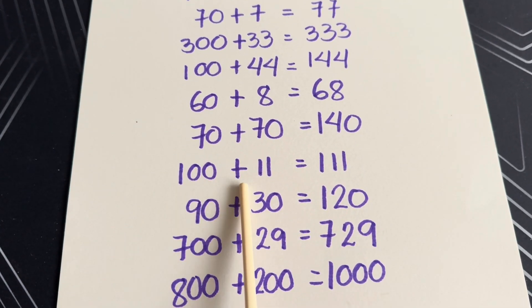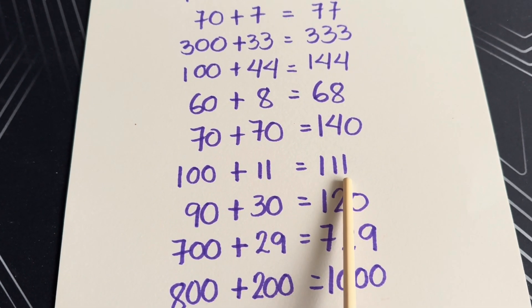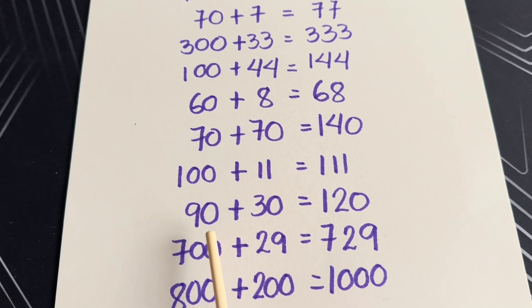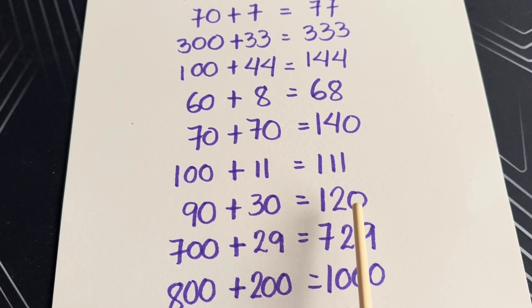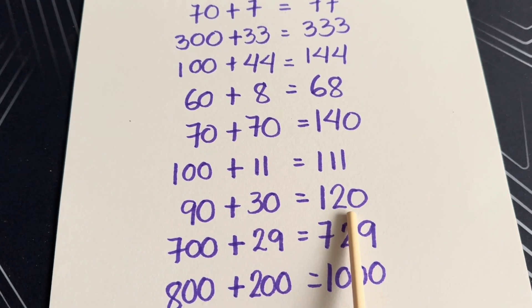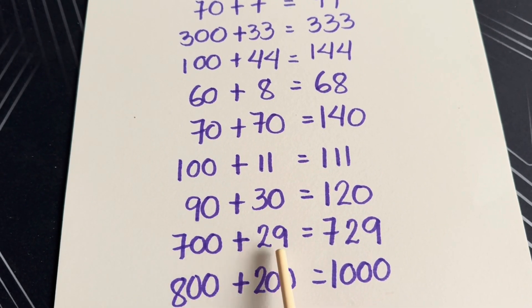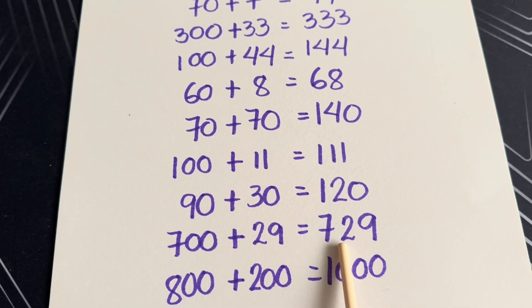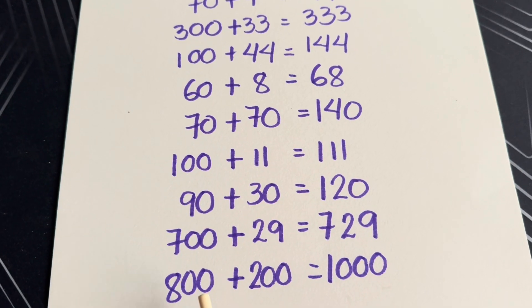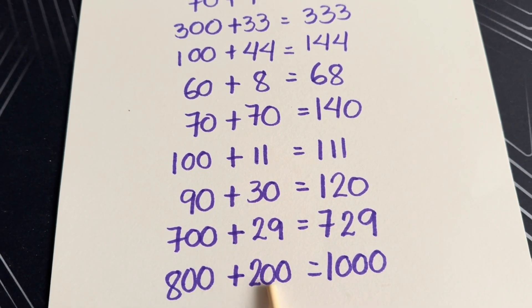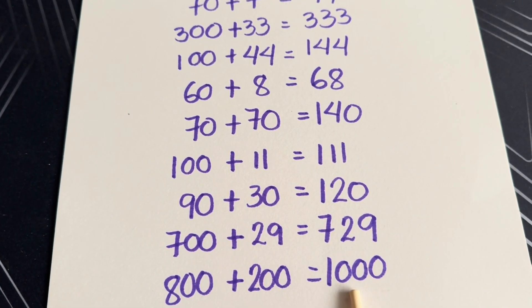100 plus 11 is equals to 111. 90 plus 30 is equals to 120. 700 plus 29 is equals to 729. 800 plus 200 is equals to 1000.